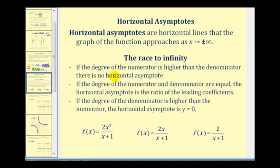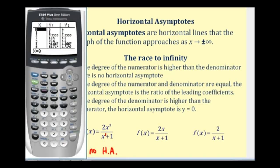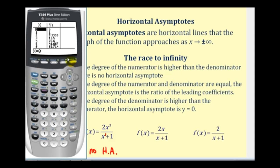If the degree of the numerator is higher than the degree of the denominator, as in this first function, there will not be a horizontal asymptote. The degree of the numerator is three and the degree of the denominator is one, so as x approaches positive infinity, the numerator increases faster and the function value increases without bound. Using a graphing calculator table, we can see that as x increases, y increases without bound.